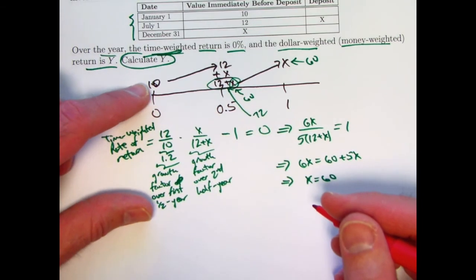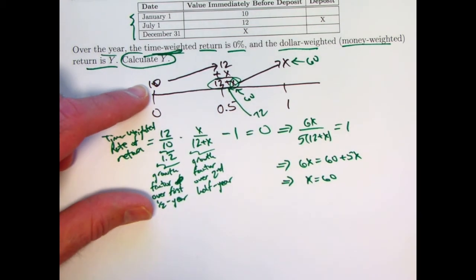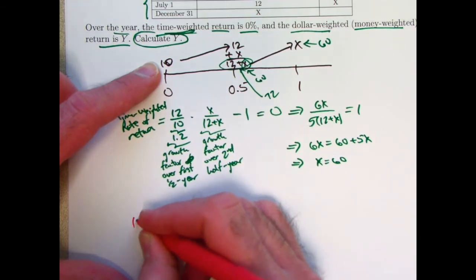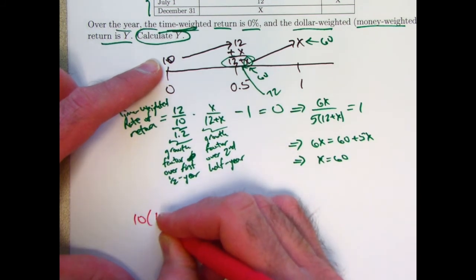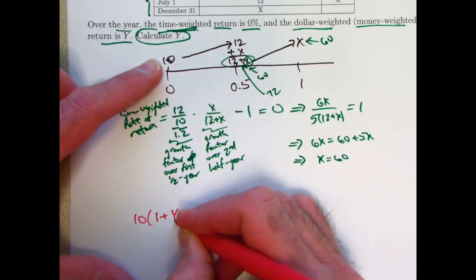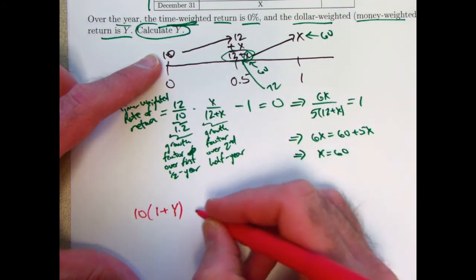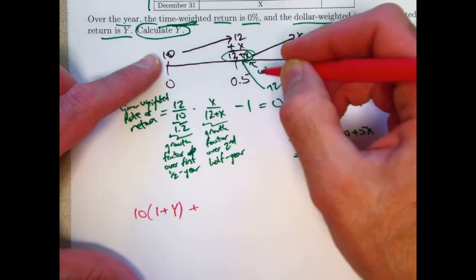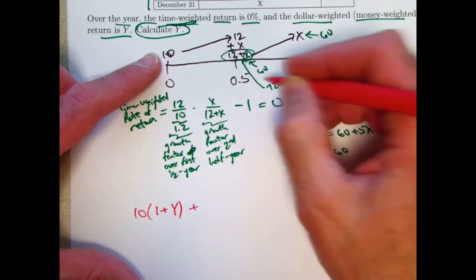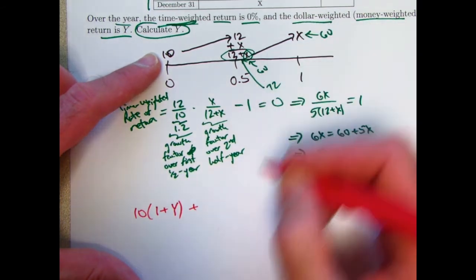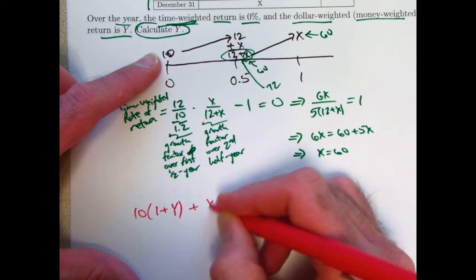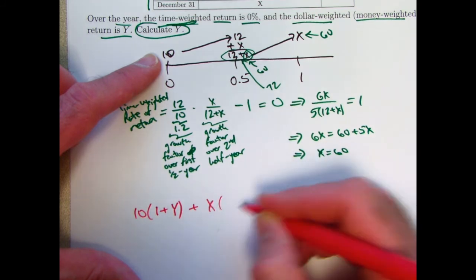So we've got the value of 10 that's going to accumulate over the whole year. So it gets multiplied by 1 plus i, or in this case, 1 plus y. And then we have the deposit of x. At time 0.5, it is important for the dollar-weighted or money-weighted rate of return that the time is halfway through the year. That value x, which gets deposited, is in there for a half year.